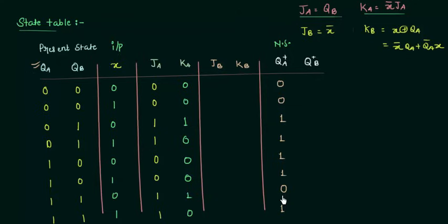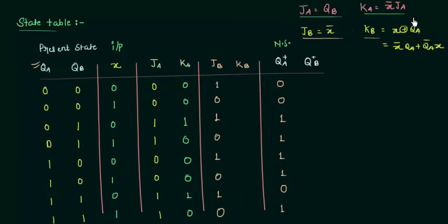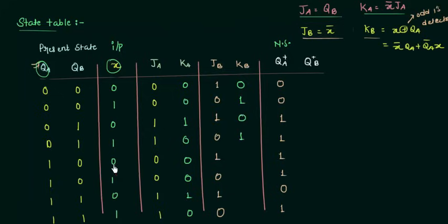Now we will move to the B flip-flop and find out JB and KB. JB equals X complement, so it's simply the complement of all the X values: 1, 0, 1, 0, 1, 0, 1, 0. KB is the XOR combination of X and QA — the odd-ones detector. Starting: 0,0 means no ones, so 0; 0,1 odd one, so 1; 0,0 gives 0; 0,1 gives 1; then 1,1 even ones gives 0; wait — 1,0 gives 1; 1,1 even ones gives 0; and 1,0 gives 1. Now we are done with JB and KB.